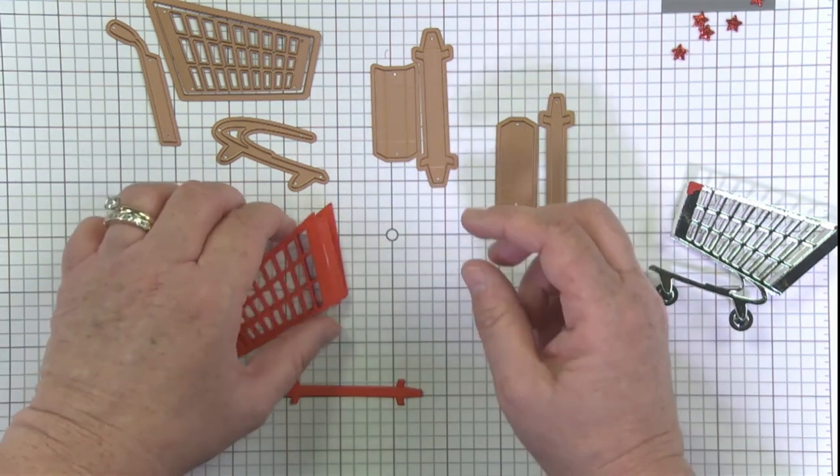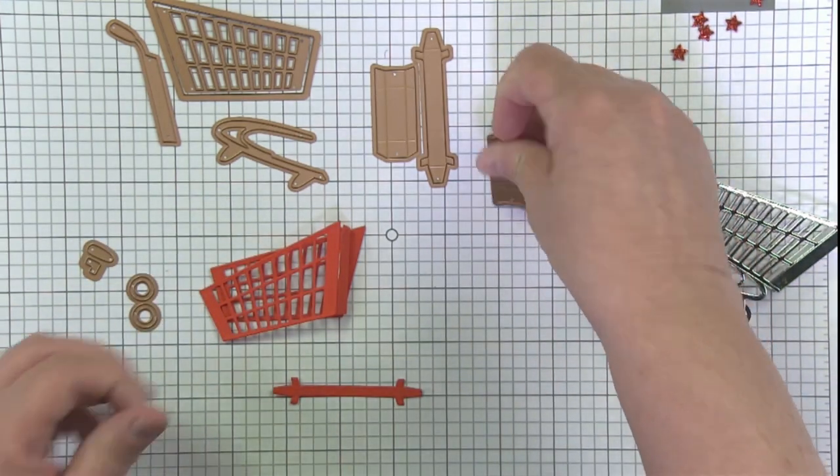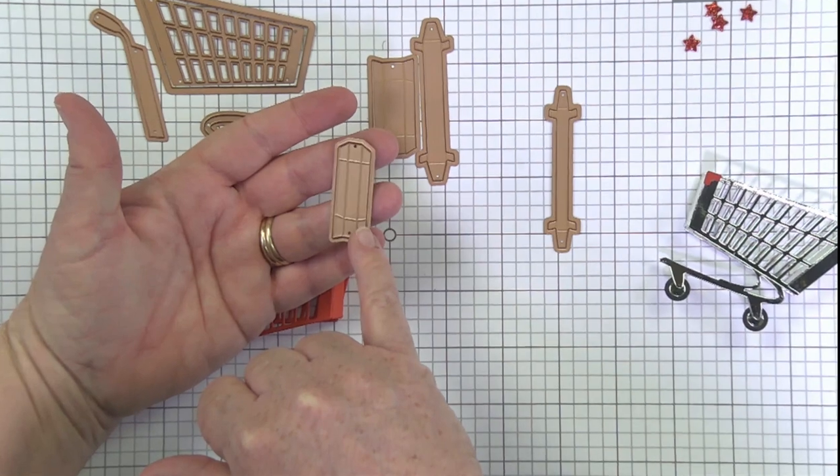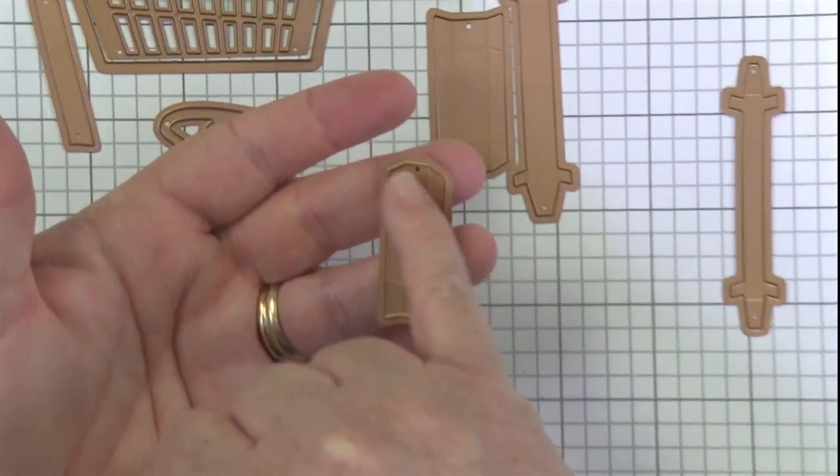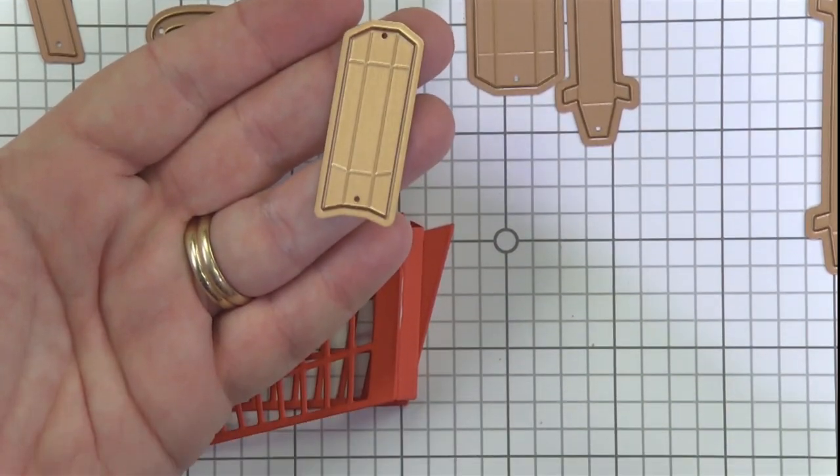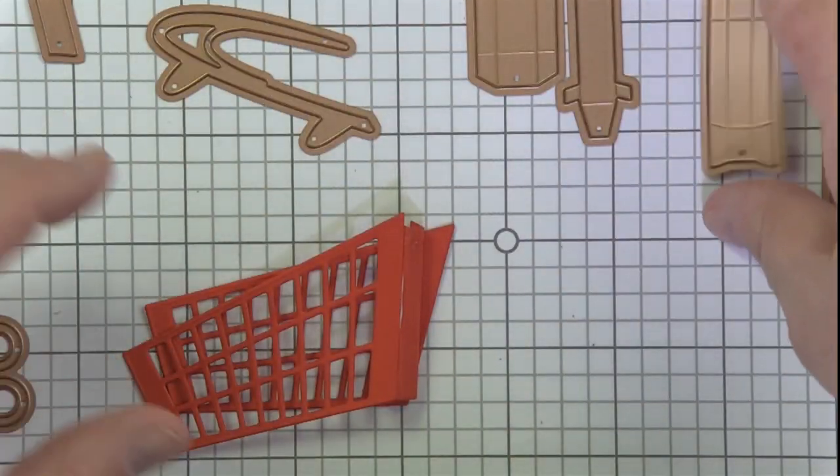When you cut the second piece, you've also got little score lines on here. You're going to want to just trim this little guy down to do the front end of your shopping cart. You can use those lines right there and you would just trim it a little bit shorter to do the other side of your shopping cart.